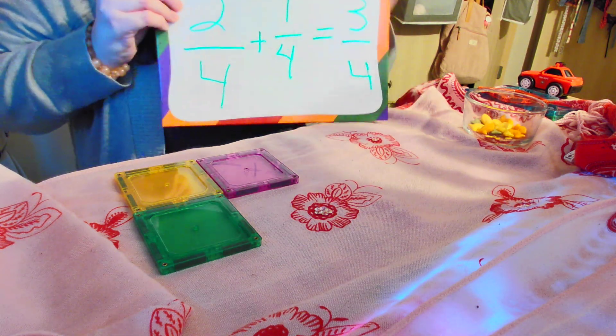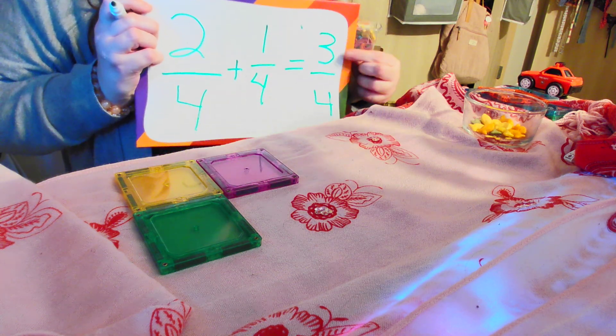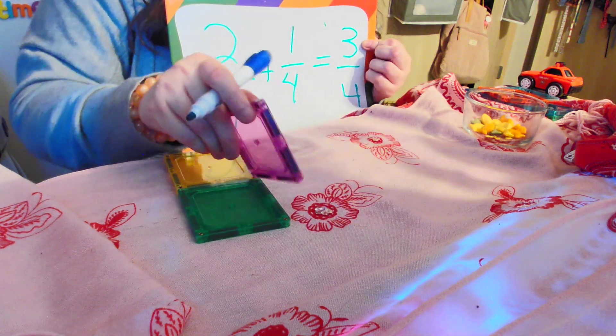So that four is very important. And it stays the exact same going all the way across. But this up here, this does not stay the same. Up here, these can be added together to tell you how many you're playing with. Right now, we're playing with three pieces. How great is that?